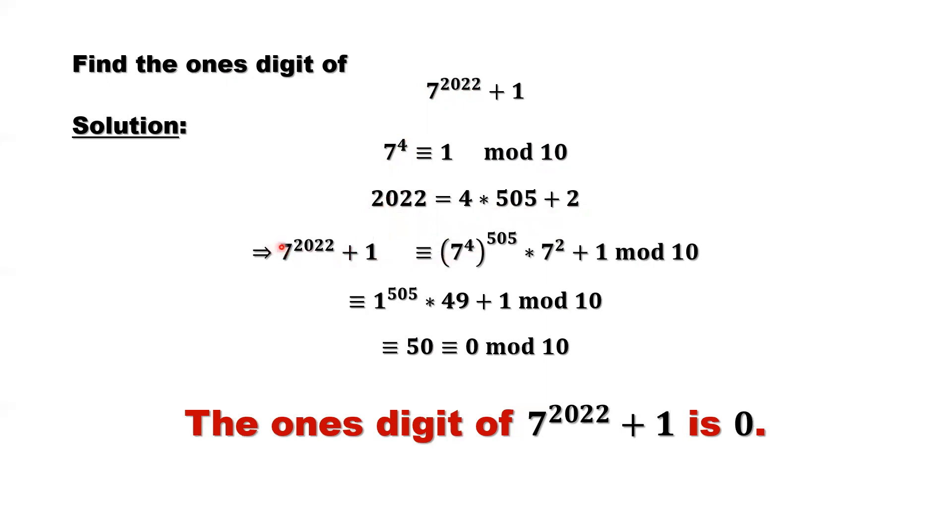But here we should replace 7 by 3. 3 here, here, 3 here, 3 here is 9. 9 times 1 is 9, plus 1 is 10. 10, for 10 the ones digit is 0 again. Same answer.